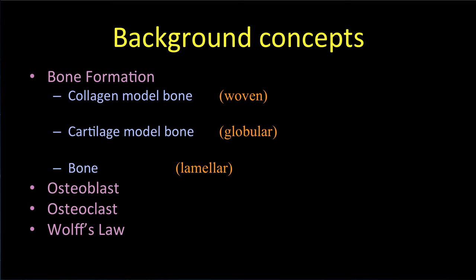Subsequent videos will outline the cellular players: the osteoblast responsible for bone formation, and the osteoclast whose task is cellular bone removal. Finally, Wolff's Law will be described. Simply said, bone is made where it is required, and deleted where it is not needed.